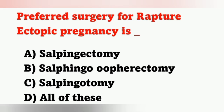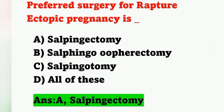The next question: preferred surgery for ruptured ectopic pregnancy. Options — A: salpingectomy, B–D: other options. The most preferred surgery for ectopic pregnancy is salpingectomy — option A — which involves removal of the fallopian tube. Ectopic pregnancy is when the fertilized egg implants and develops outside the uterine cavity. Today we discussed questions from maternity nursing. Please subscribe and share my videos with your friends.